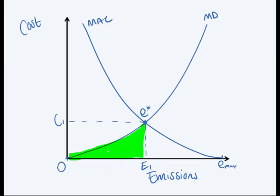And this, let's make a yellow block over here, shows my total abatement cost, meaning the total cost society had to pay to clean up the emissions up until point E star.